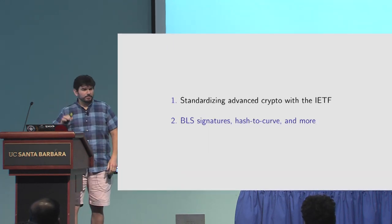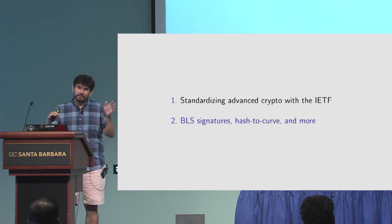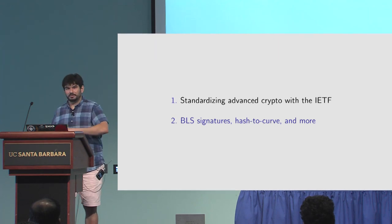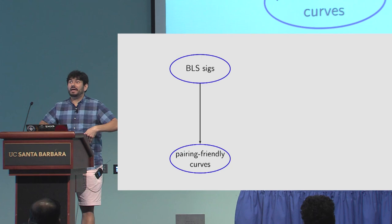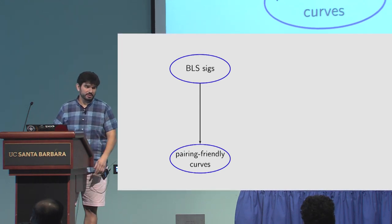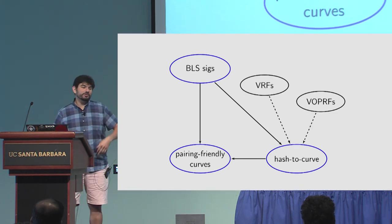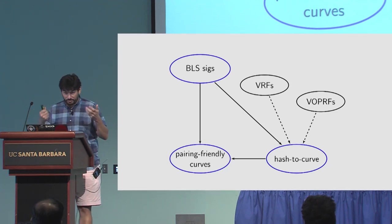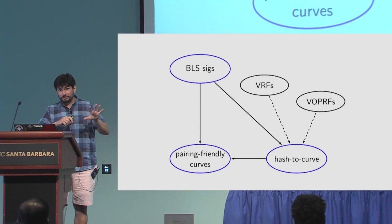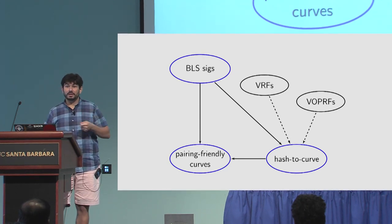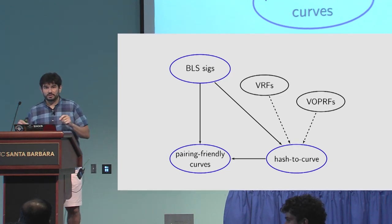Let's take a deeper look at the specific work on BLS signatures and hash-to-curve. The BLS signatures draft needs pairing-friendly curves, so it relies on a separate document defining those, which is also currently being worked on. It also relies on the hash-to-curve document, which in turn defines hashes to pairing-friendly curves and depends on the pairing-friendly curves document. A few other documents may depend on hash-to-curve in the near future. This creates interesting dependency graphs - not unusual, as documents frequently depend heavily on other RFCs, which means interacting a lot with those teams and not having to re-specify things already standardized elsewhere.